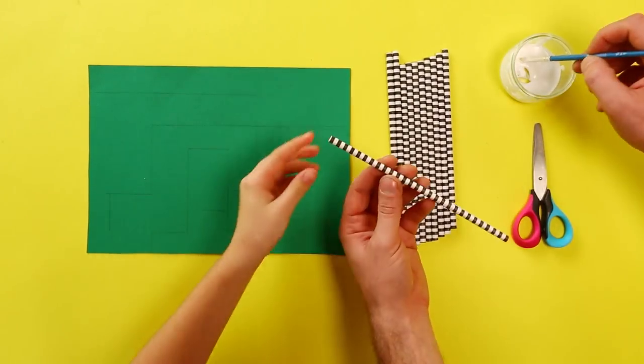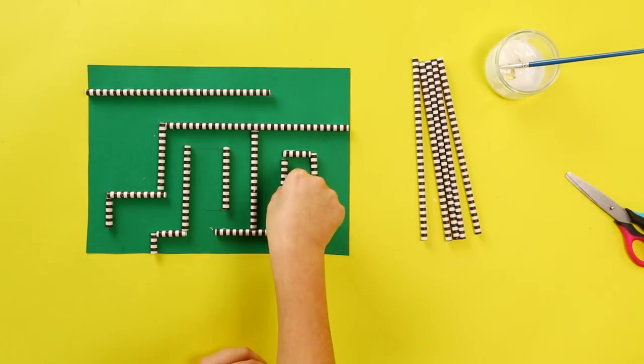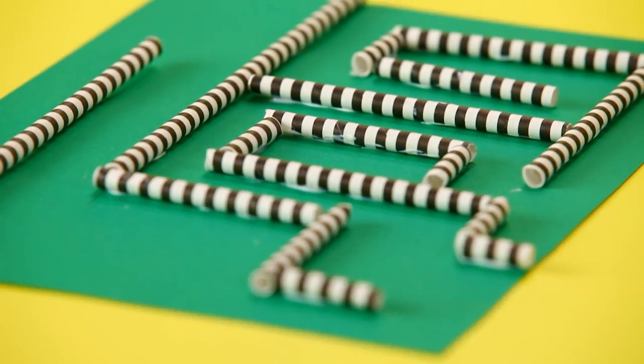Next, glue the straws to the pencil lines to create the walls of your labyrinth. Cut the straws to size to match the length of your lines, then leave it to dry.